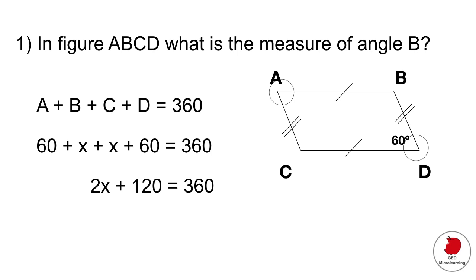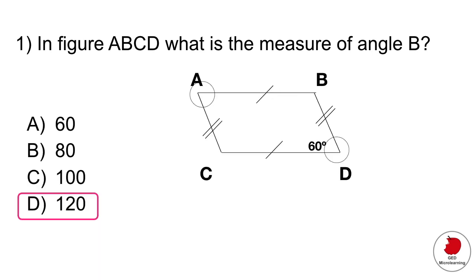If you tidy that up, you end up with this. Now all you have to do is isolate the X on the left side by subtracting 120 from each side. That gives you 2X equals 240, divided by 2 equals X equals 120. If you add up all the angles of your parallelogram, you'll see you get 360. So the correct answer is D.